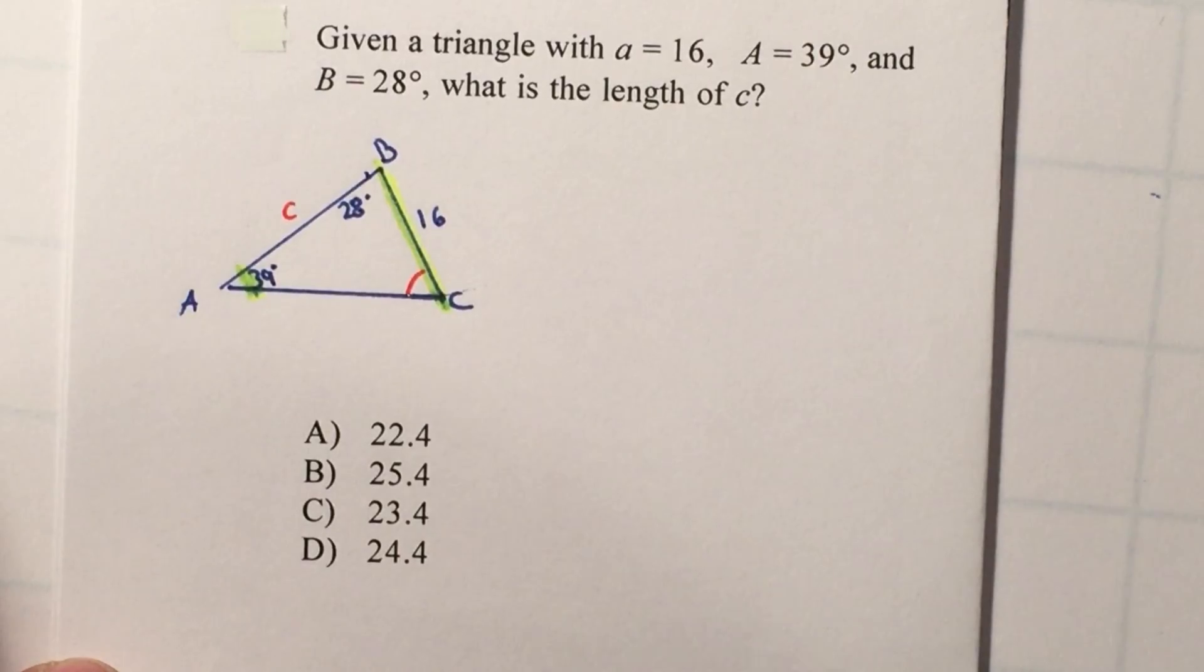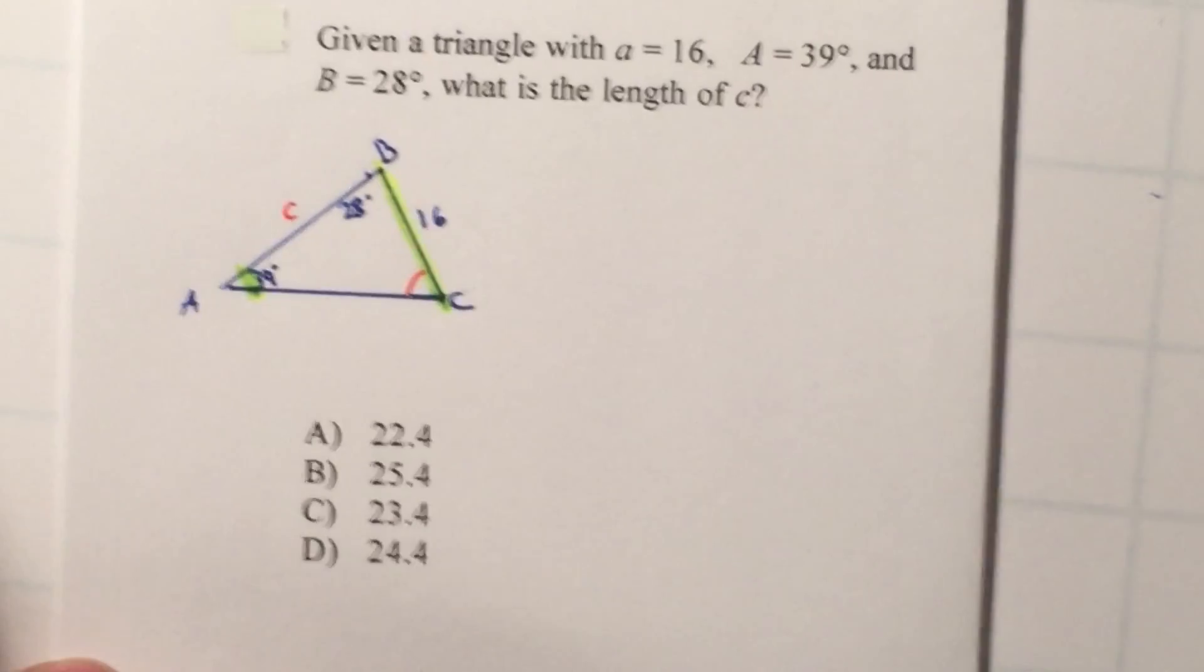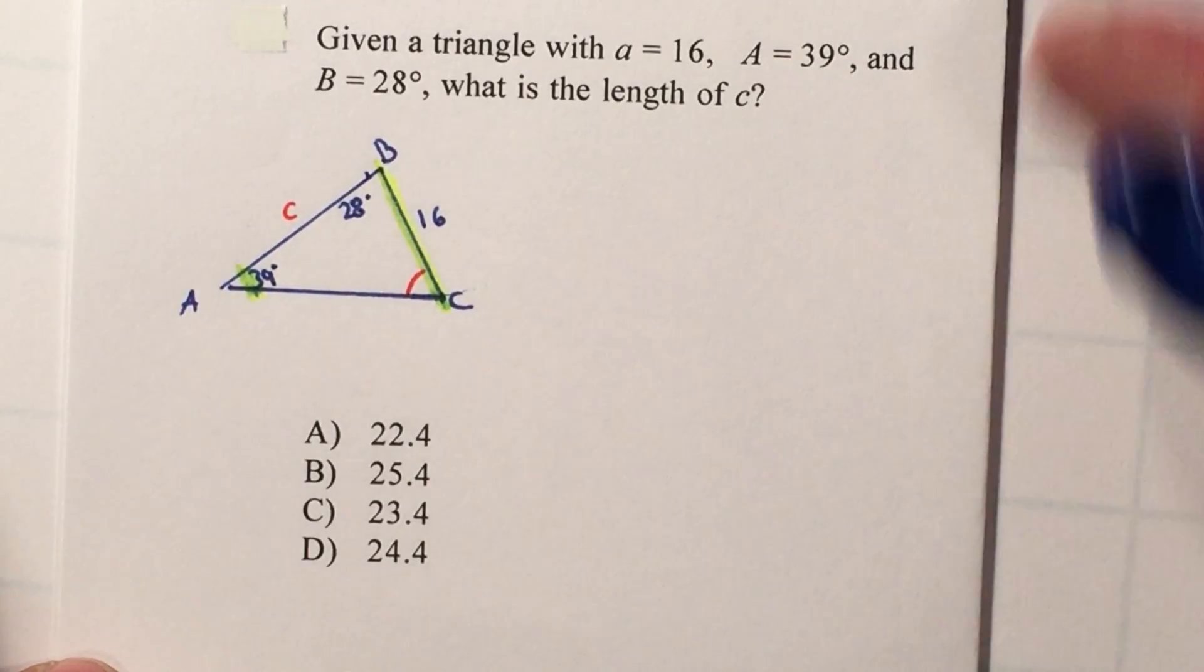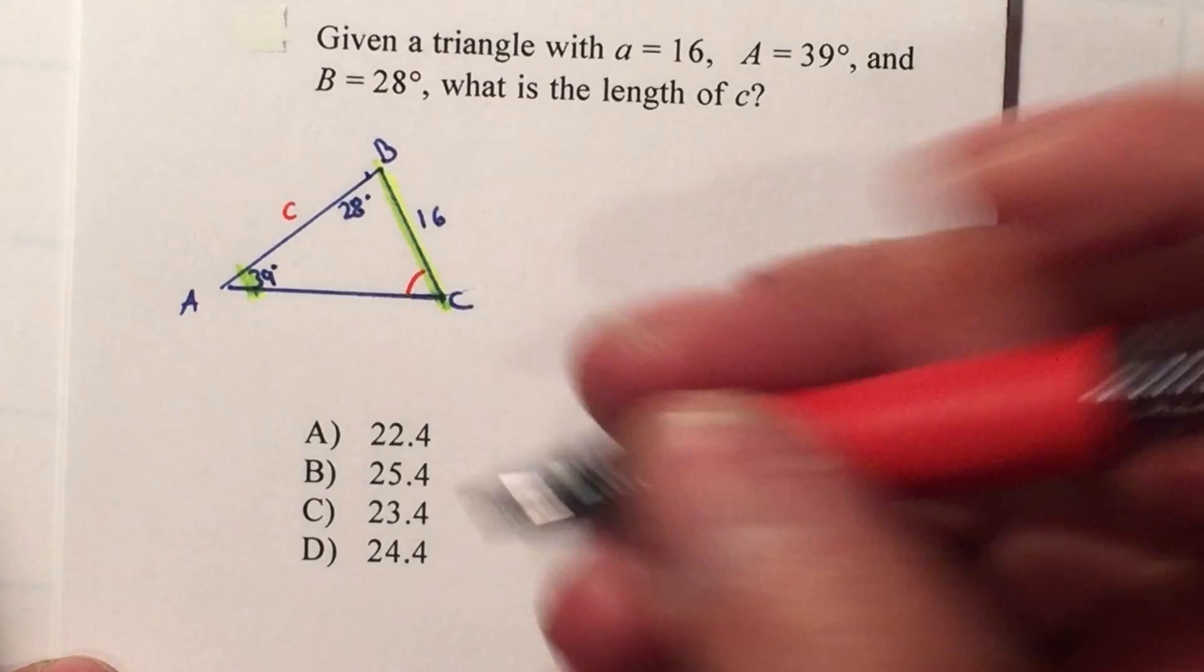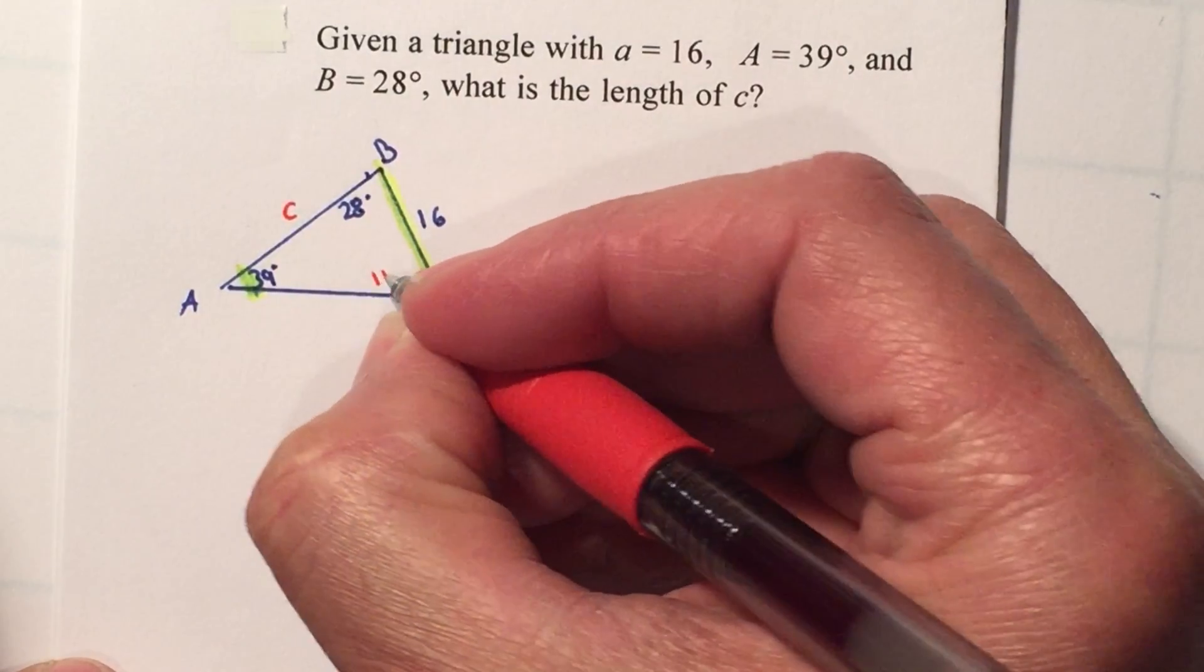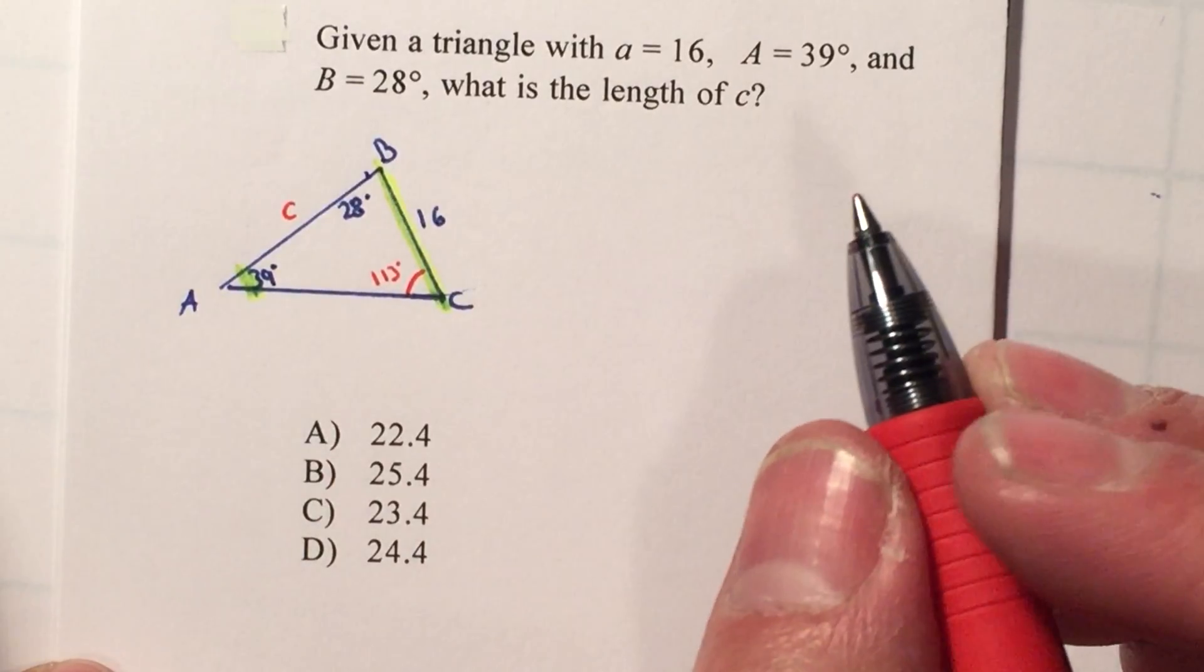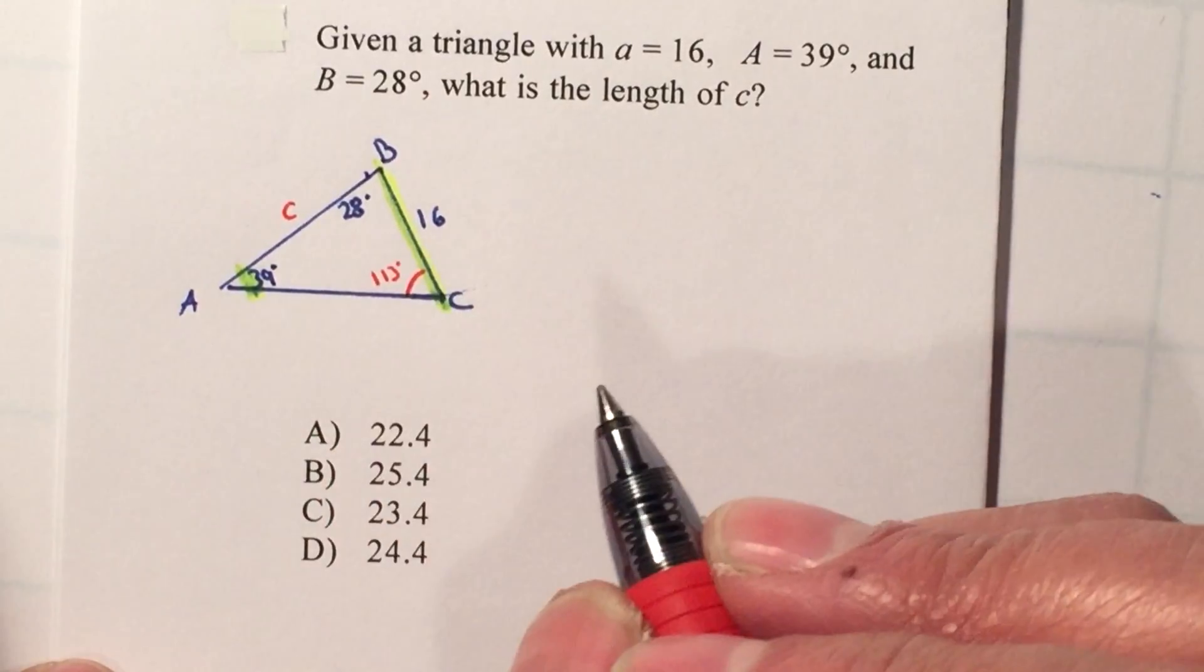I know all three angles equal 180 degrees. I'm going to do 180 minus 39 minus 28, which equals 113. Remember my triangle is not to scale. Just because I didn't know what the angle is, it makes it challenging to try to scale before you know the information.